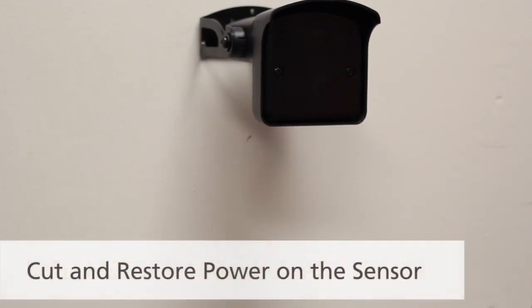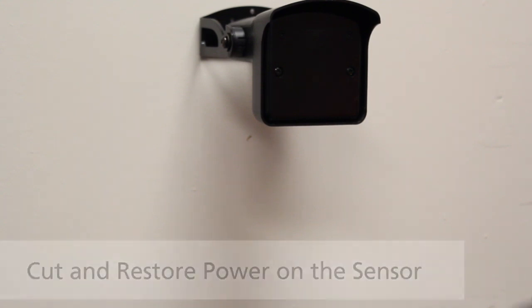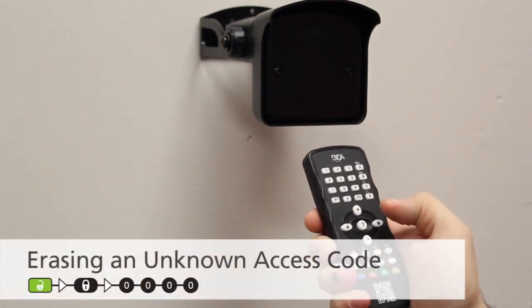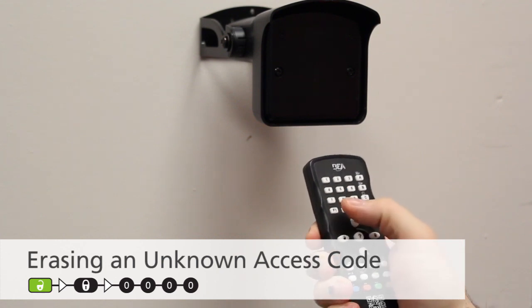If you do not know the access code set to the sensor and need to erase it, you must first cut and restore power to the sensor. Once you have power cycled the Falcon, press unlock, lock, 0000.